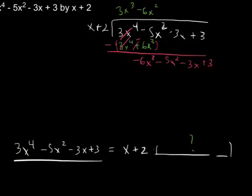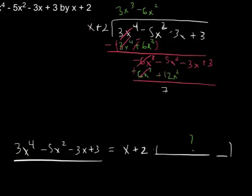What will negative 6x squared times x plus 2 give me? It's going to give me negative 6x cubed minus 12x squared. Subtracting everything will make both of those plus signs, which will cancel my 6x cubed and give me 7x squared minus 3x plus 3.